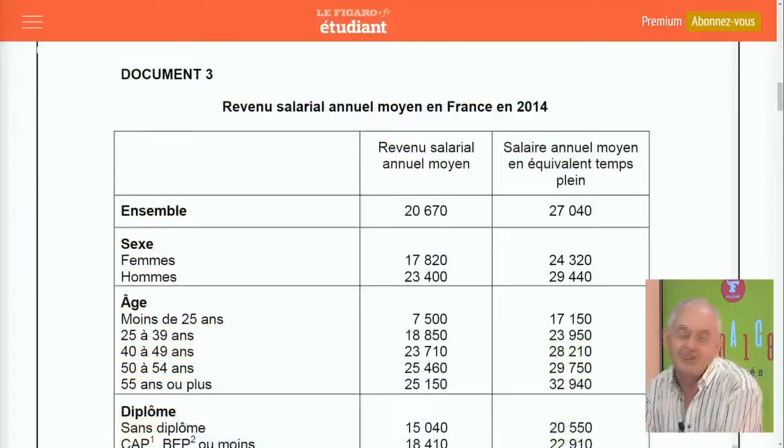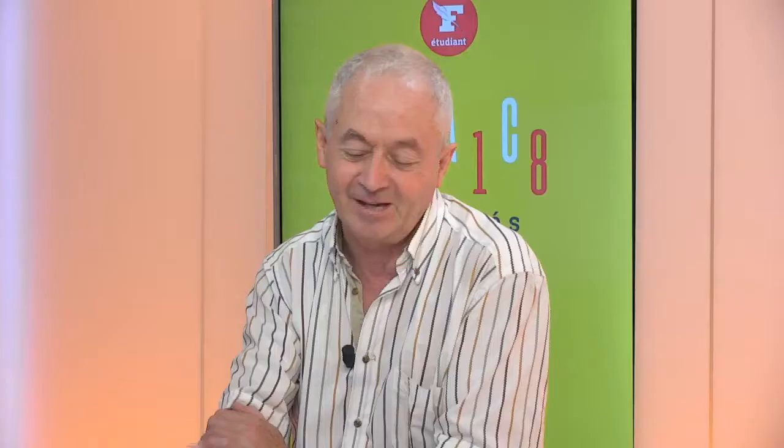On pourrait s'appuyer aussi sur le document 3 de la dissertation. Mais ce qui est conseillé aux élèves, c'est qu'une fois qu'ils ont choisi leur épreuve, de se tenir non seulement aux questions posées mais aussi aux documents fournis. Je pense que les élèves auront pu assez facilement avoir une note relativement correcte sur ces questions de cours. C'était donc la première partie de l'épreuve composée.